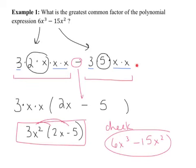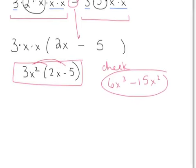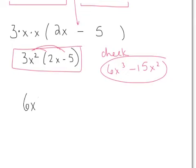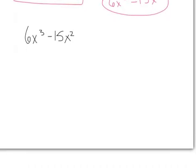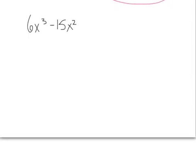You don't want to use prime factorization every time, so let's do this problem again a different way. For 6x³ minus 15x², first figure out what number goes into both coefficients. The factors of 6 are 3 and 2. 2 doesn't go into 15, but 3 does go into 15. So start by putting a 3 out front, showing we've taken a 3 out of both terms.